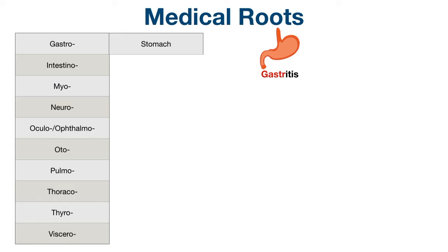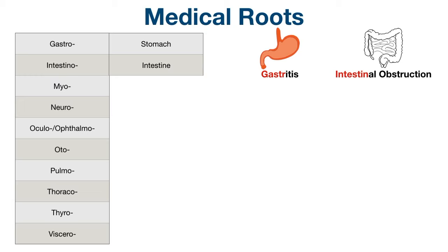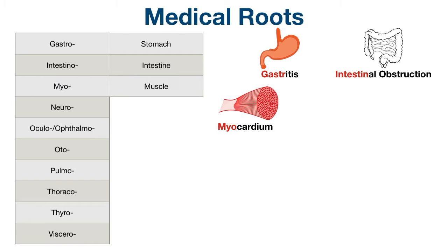Next, we have intestino, which refers to the intestines. It's easy to remember because intestino and intestine sound the same. You can think of intestinal obstruction, which is a partial or complete blockage of the intestines. The next root is myo, which means muscle. For example, the myocardium is the muscular tissue of the heart.